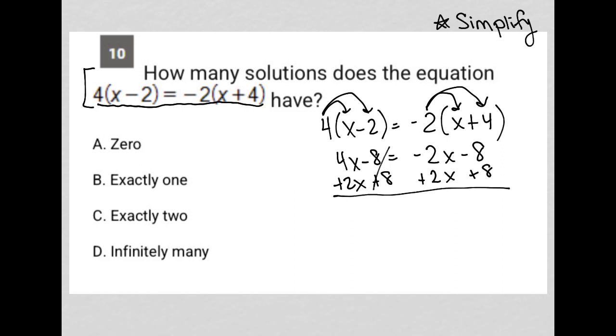What I'm left with here is 6x is equal to 0. Divide both sides by 6, and what I have is that x is equal to 0.